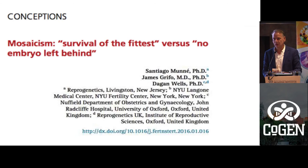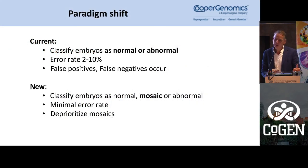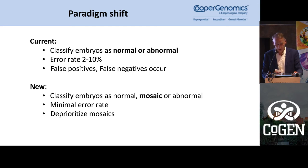There was no evidence of mosaicism in those mice that reached term. So basically, depending on the amount of abnormal cells, the embryo will either not implant or miscarry, but seldom will the abnormal cells form part of the fetus. It seems that at a certain level the normal cells take over and the embryo will be normal. Before this, with array CGH you would classify an embryo as normal or abnormal with an error rate of 2 to 10% depending on the technique, giving false positives and false negatives.